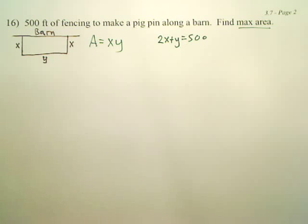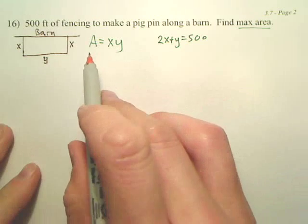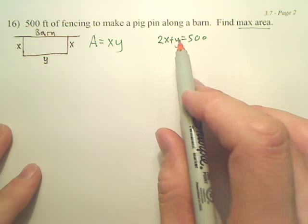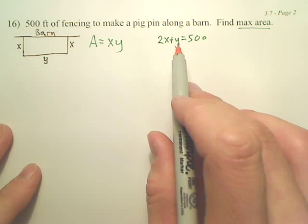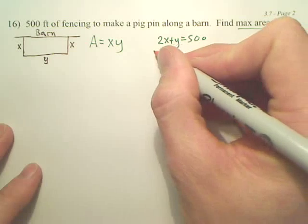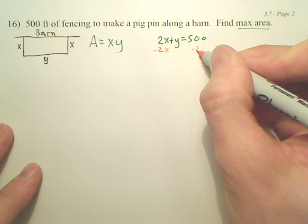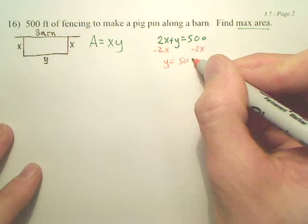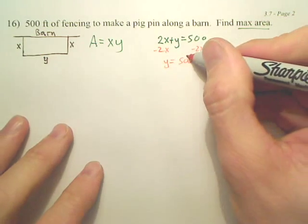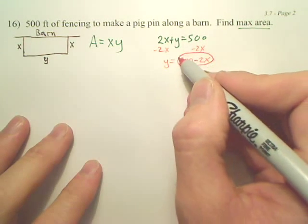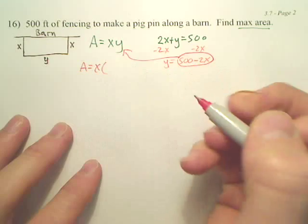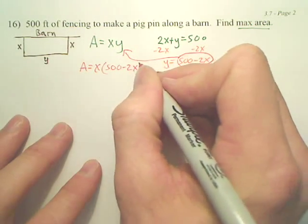Now, in order to solve, in order to get this into one variable, what variable do you want to change this? I probably want to get y by itself. Wouldn't that be the easiest, prettiest? If I got x by itself, I'd get some fractions. So I'm going to take the minus 2x over. You're going to take this and plug it in your primary for y. Now, you have x times 500 minus 2x. That is my new equation.